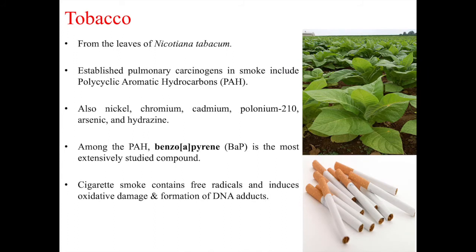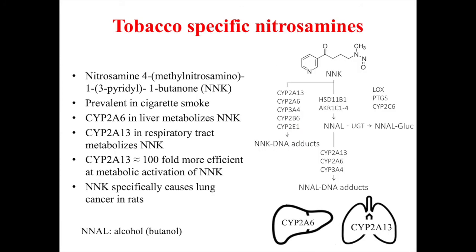Tobacco is a major toxicant of the lungs, coming from the leaves of Nicotiana tabacum. Established pulmonary carcinogens in tobacco smoke include polycyclic aromatic hydrocarbons. Cigarettes also contain heavy metals like nickel, chromium, and cadmium, radioactive substances like polonium-210, as well as arsenic and hydrazine. Among the polycyclic aromatic hydrocarbons in cigarette smoke, benzo[a]pyrene is probably the most extensively studied compound. Cigarette smoke also contains free radicals that can induce oxidative damage to cells, and tobacco-specific nitrosamines can form DNA adducts, particularly NNK, which is quite prevalent in cigarette smoke.